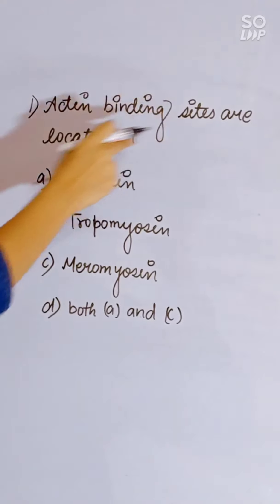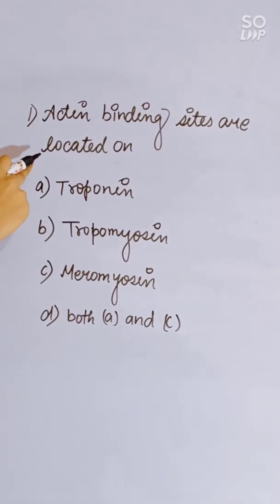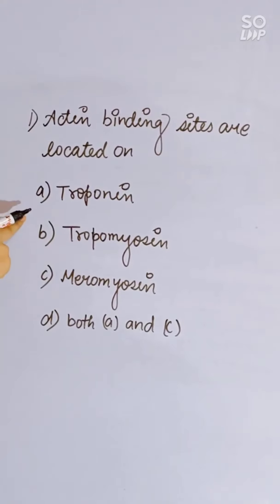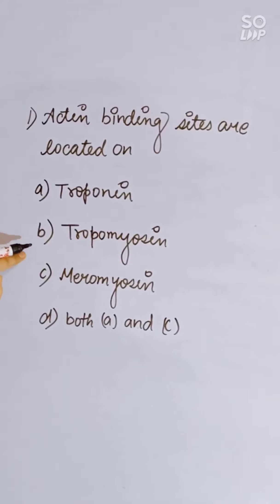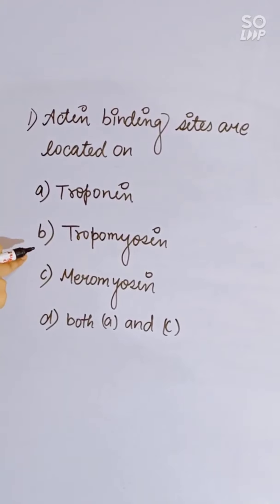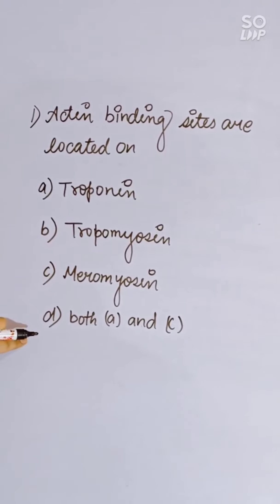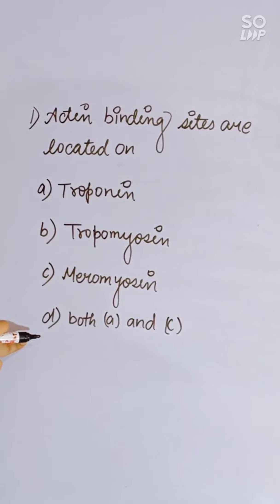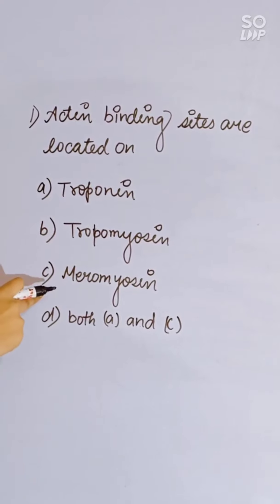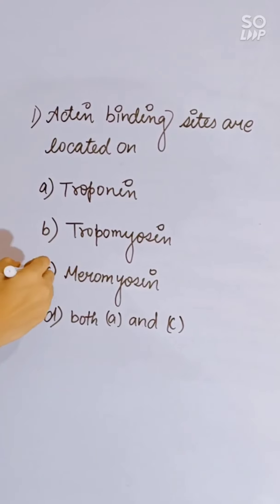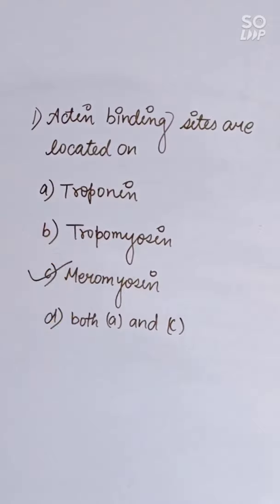Actin binding sites are located on: troponin, tropomyosin, meromyosin, or both A and C. Actin binding sites are located on meromyosin. Correct answer is C.